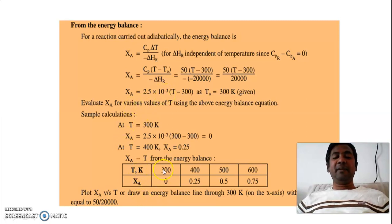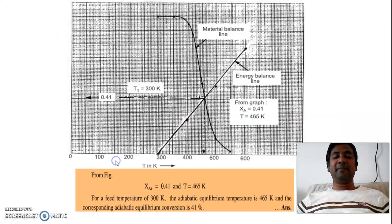Now when you substitute the value of temperature as 300, 400, 500, 600, you will get various values of X_A from this equation. So this is T versus X_A. So you can plot a graph of T versus X_A. So this is the energy balance line.